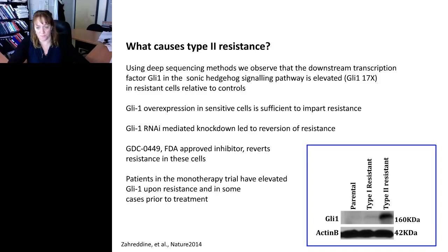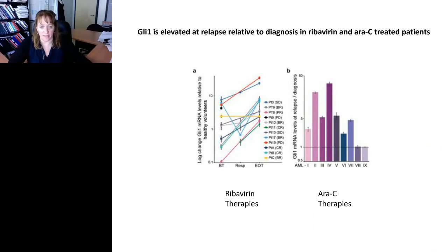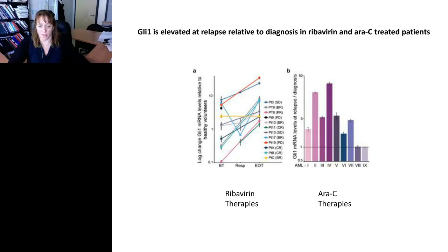Looking at total RNA levels of a subset of patients from our two trials where we had material before treatment, at response, and at end of treatment: the overriding trend with GLI-1 RNA relative to healthy volunteers is that relative to onset of treatment, you always have higher GLI-1 at relapse. We also asked whether this is specific to our ribavirin-containing trials or more global. Looking at patients at relapse and diagnosis who received only standard-of-care ara-C-containing therapies, seven out of nine had highly elevated GLI-1 at relapse relative to diagnosis, although two did not — so it's not everybody, but in our group it seems to be most patients.